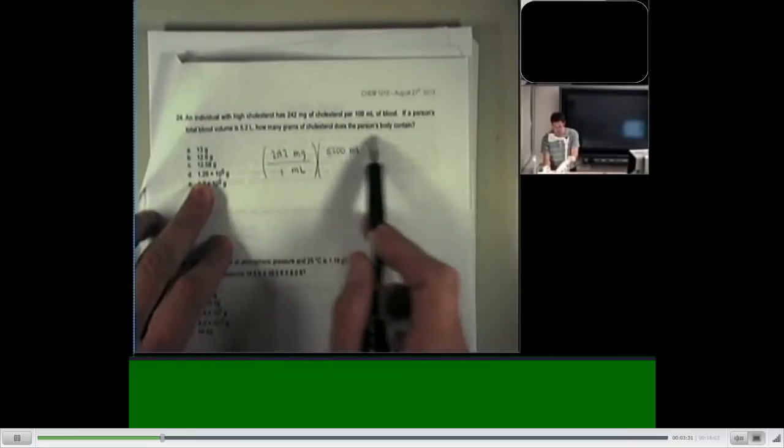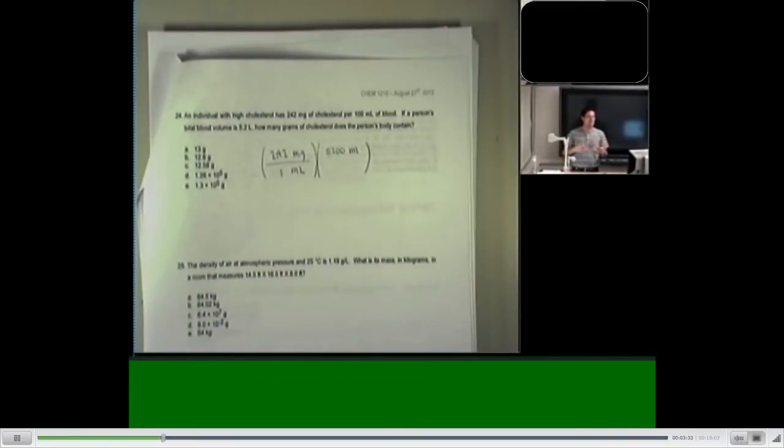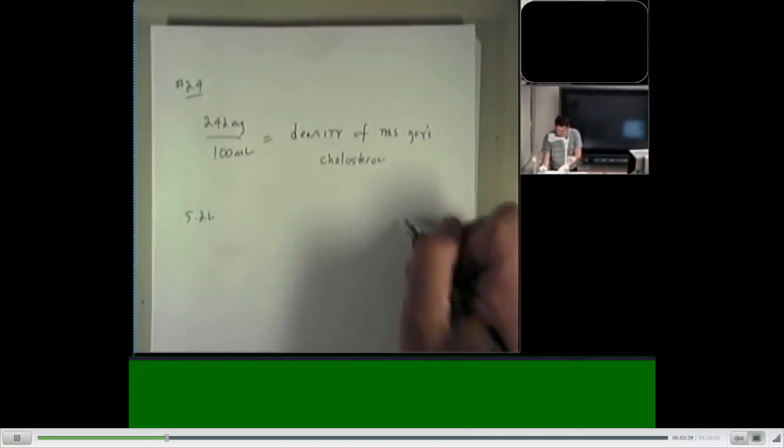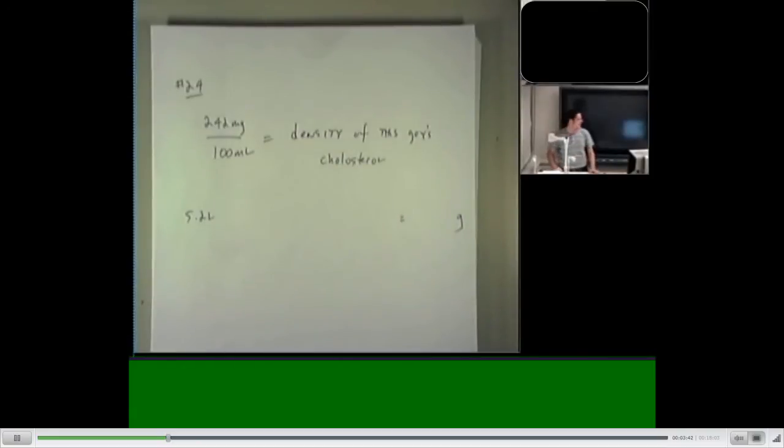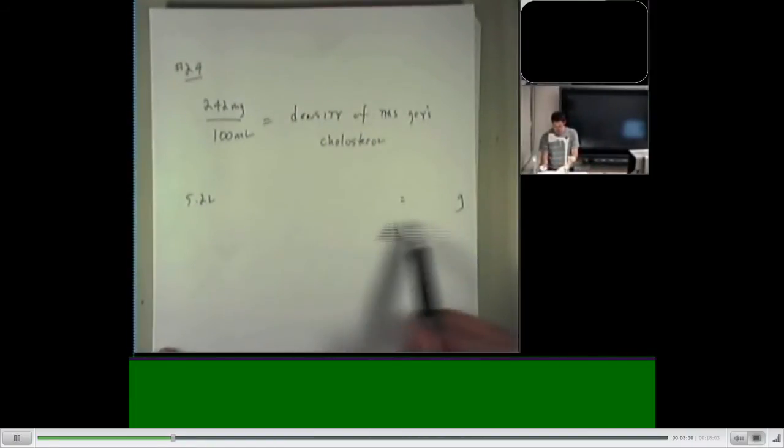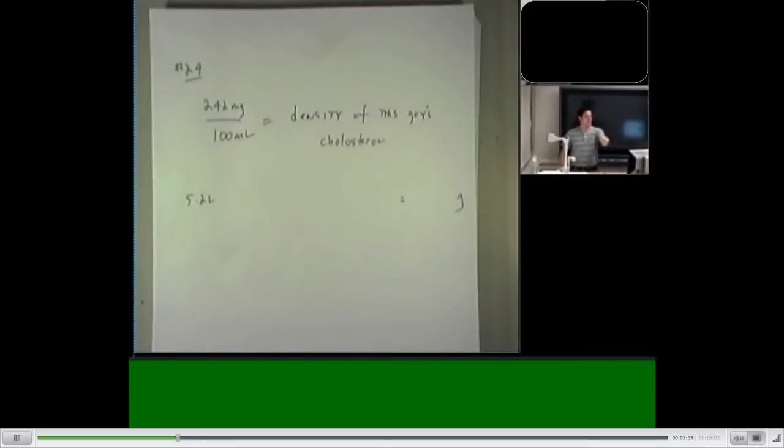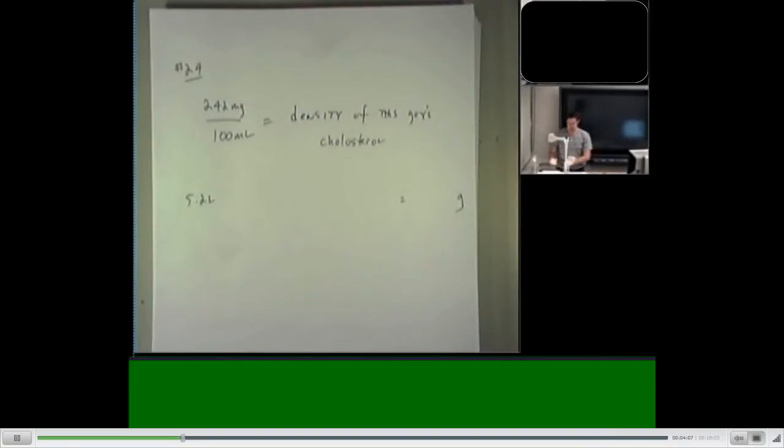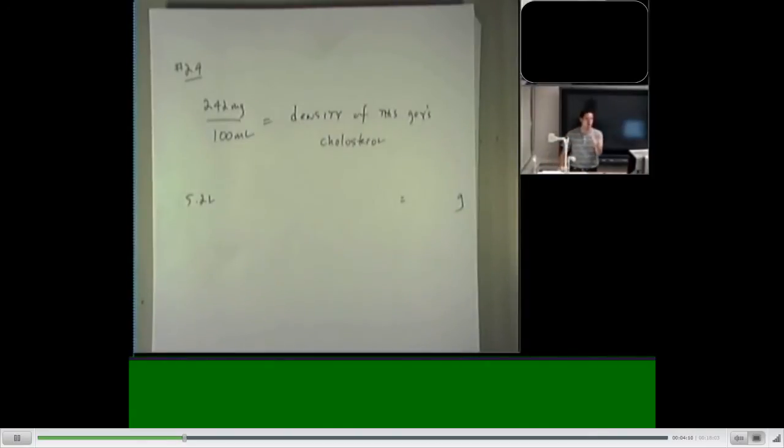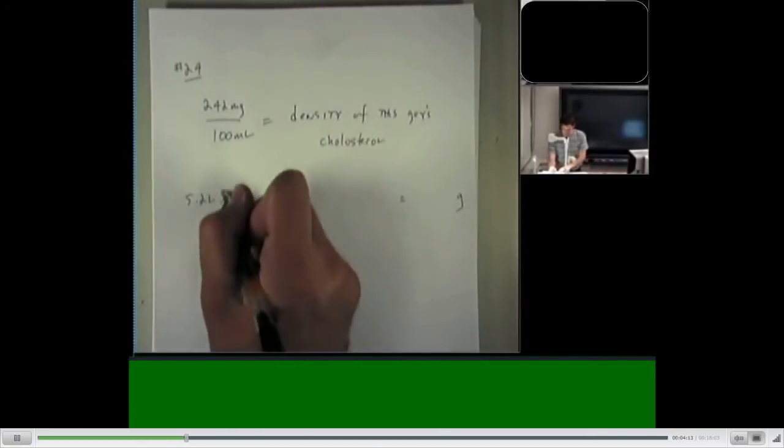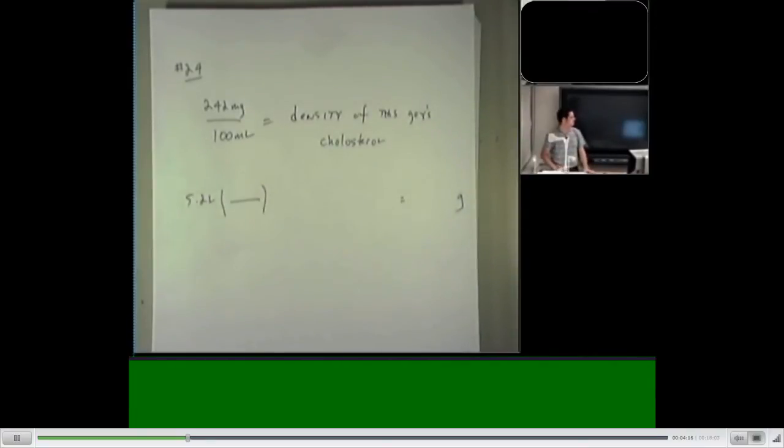And now I try to figure out where am I trying to go? It says how many grams of cholesterol does the person's body contain? So my final answer should have what kind of units? Grams. So I'm going to go ahead and write down 5.2 liters. And I have to do some stuff. And I want to end up with grams. I have no idea where it's going to go in between. No clue. I just know that I need to take this 5.2 liters and do some stuff to eventually get the grams. So how in the world do I do this? The answer is by going through the magical, repetitive, monotonous steps that we do in dimensional analysis.